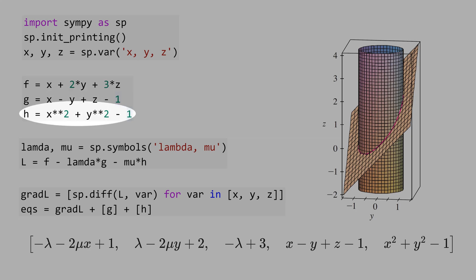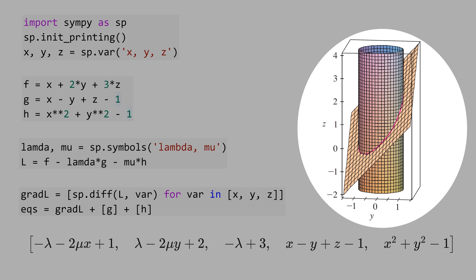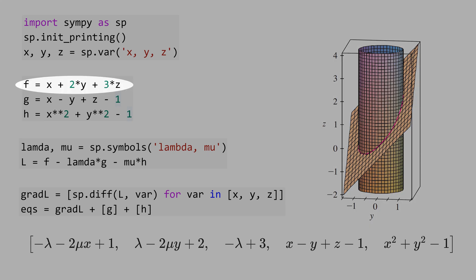g is a plane and h is a cylinder. That means the intersection between the cylinder and the plane is an ellipse. And you have to test the points of the ellipse in the function f to figure out what's the maximum.